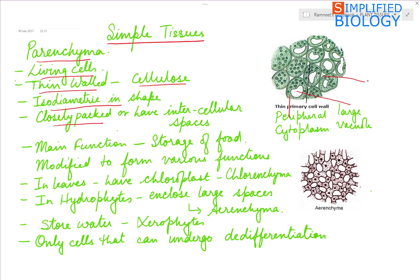Parenchyma are found present in all parts of the plant body: roots, stem, leaves, flowers, fruits, seeds — everywhere, even the different parts within an organ. Their main function is storage of food, but they are modified to perform various functions.